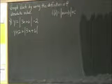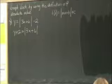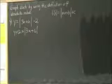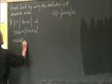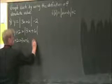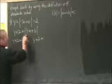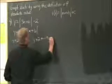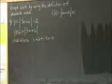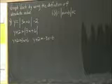Once I have the absolute value piece isolated, I'm going to break this up into two separate equations using the definition of absolute value. I know y plus 2 can equal 3x plus 6. But I also know that y plus 2 can equal the opposite of what's in the absolute value, which is negative 3x minus 6. That's right from the definition of absolute value, which we have used before.